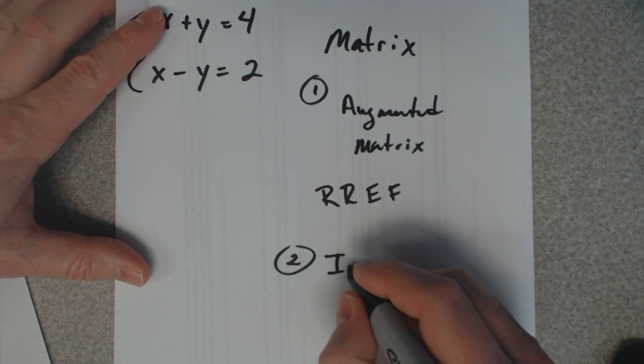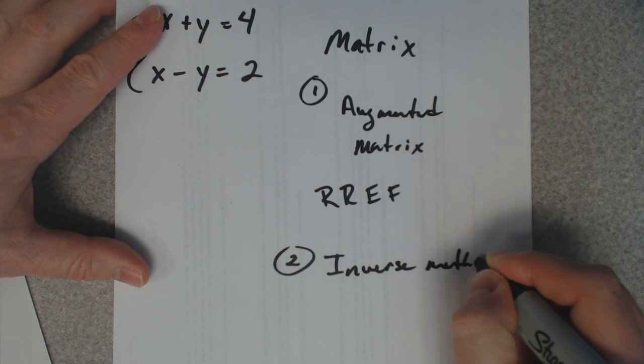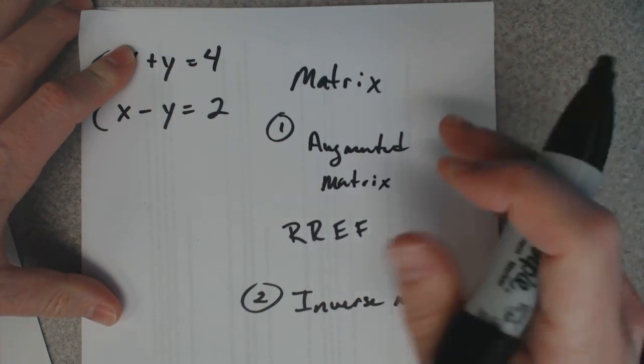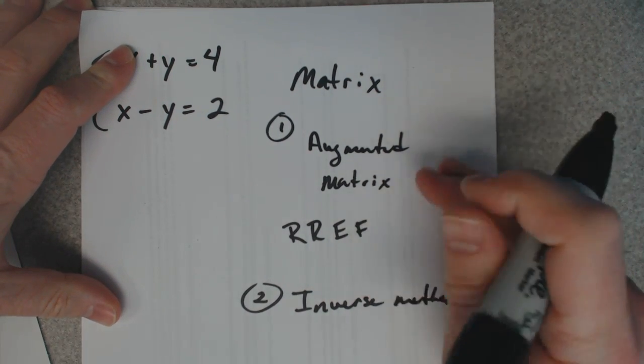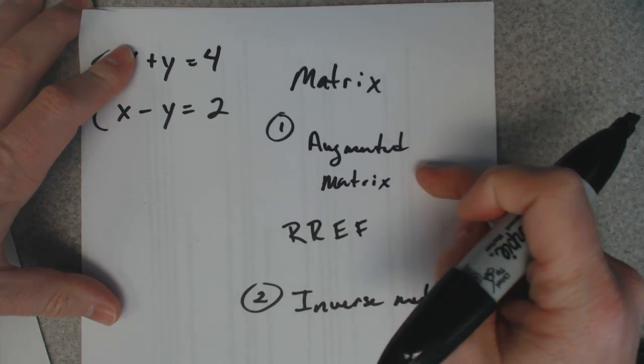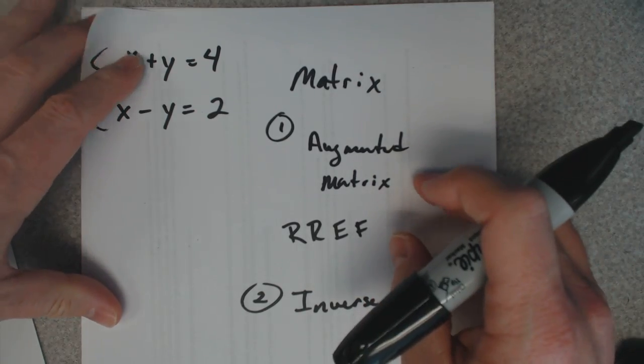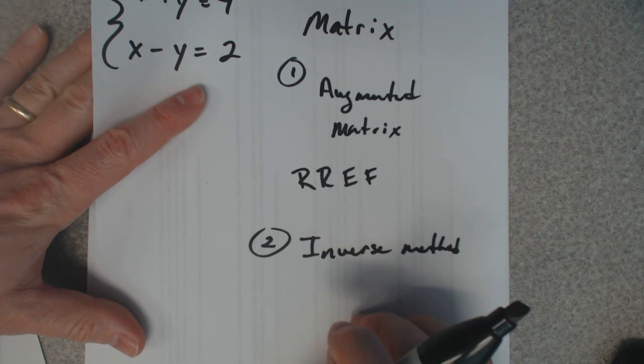Now this method, this one right here, will tell you if there's one solution, if there's no solutions, or if there's infinitely many. This one really only tells you if there is one solution.